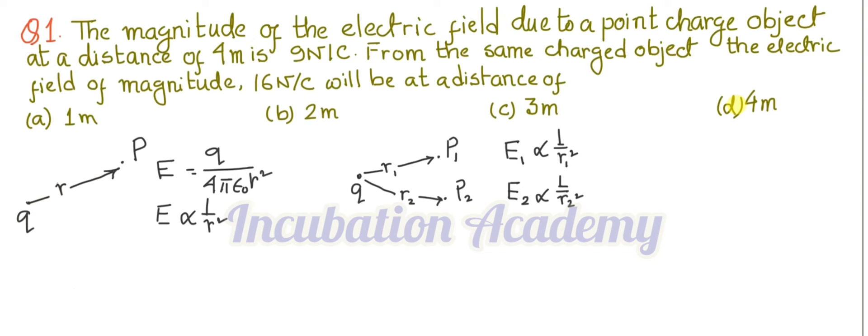We can write E1 divided by E2 is R2 square divided by R1 square, because it varies inversely proportional to the distance. Now in this question...